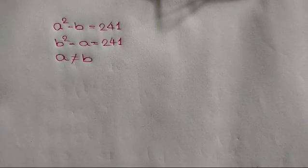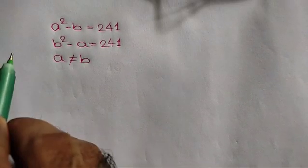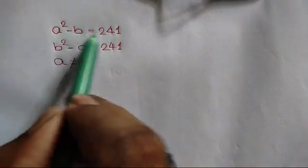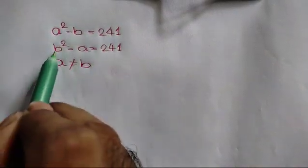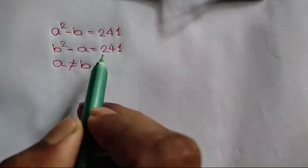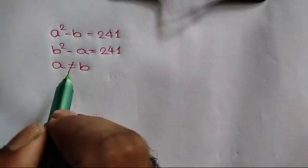Hi everyone. In this video I am going to show how to find the value of A and B, where A squared minus B is equal to 241, B squared minus A is equal to 241, and A is not equal to B.